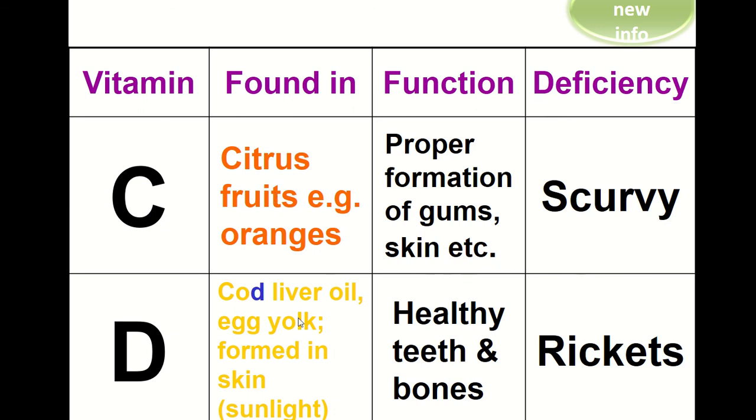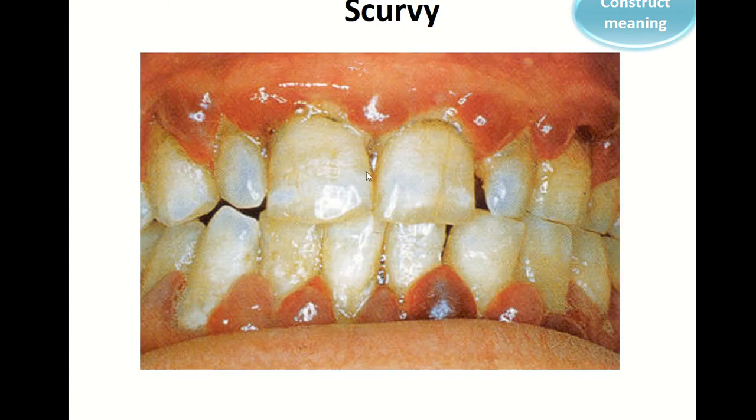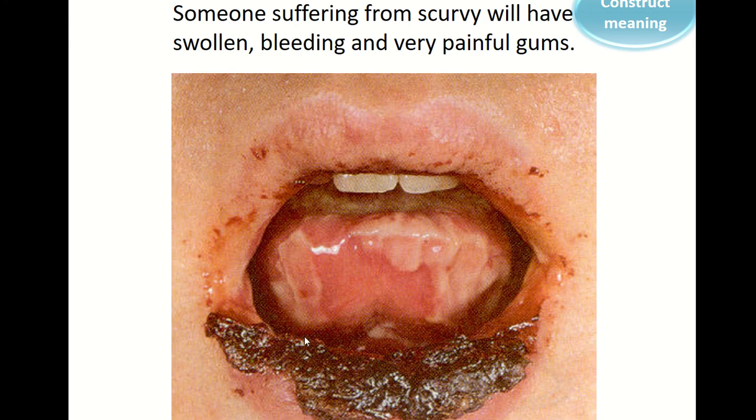Vitamin D is found in cod liver oil, egg yolks, and is formed in the skin if we're out in sunlight, and it prevents a disease known as rickets. So here we have an image of scurvy, and you can see here the gums have become inflamed, quite painful. And here we have quite a severe case of scurvy, and the skin of the lip is actually suffering here. The gums can swell, lips can swell, it's a very, very painful disease. So there's a good reason for us to make sure and get plenty of vitamin C into your diet.